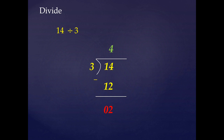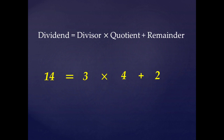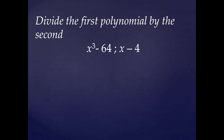In this division process, 14 is the dividend, 3 is the divisor, 4 is the quotient, and 2 is the remainder. We can write these in the form: dividend = divisor × quotient + remainder, which can be verified as 14 = 3 × 4 + 2. So this is the procedure to divide two numbers. Now we are going to use the same procedure for the division of polynomials.